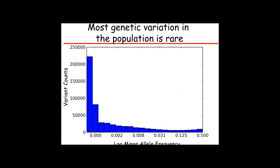I've logged the minor allele frequency, and I'm highlighting one percent, which most GWAS chips with imputation will capture. You can see that's just one part of the picture of natural variation in the population. There's a large fraction that we're not capturing. I think everyone is interested in running the gamut of allele frequencies across the population.